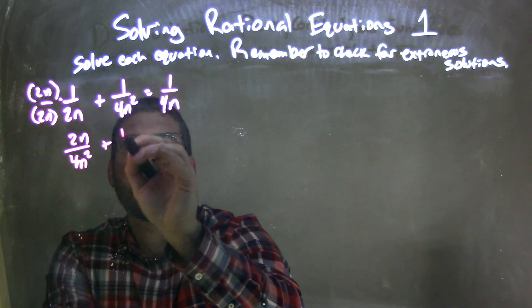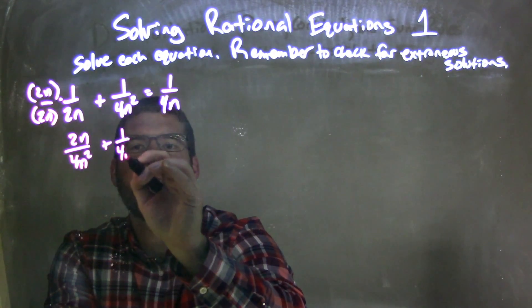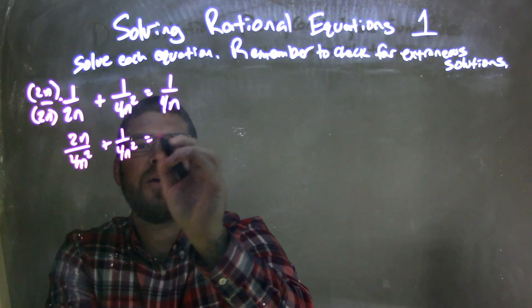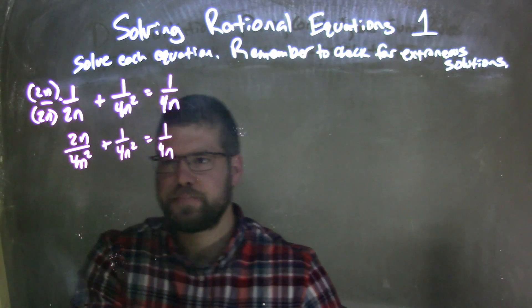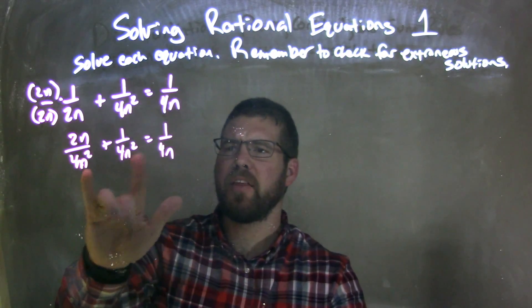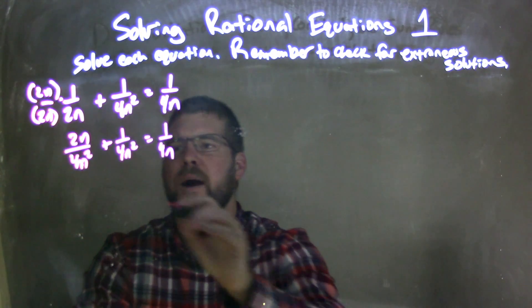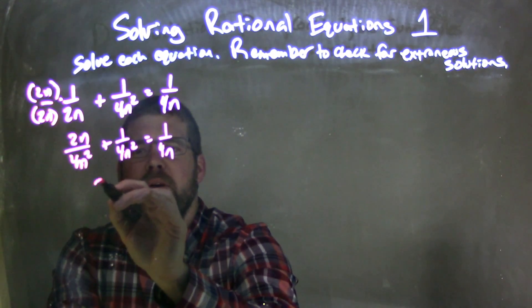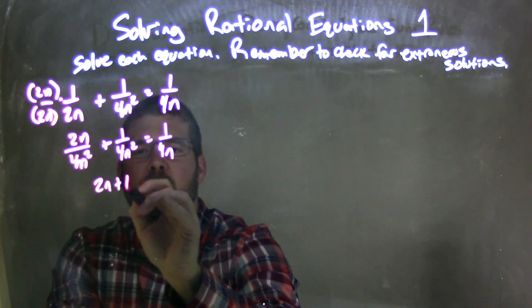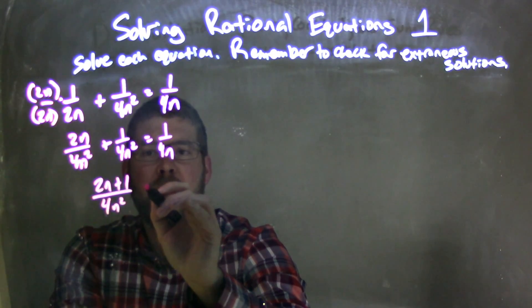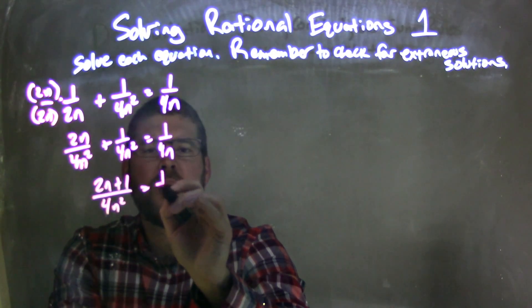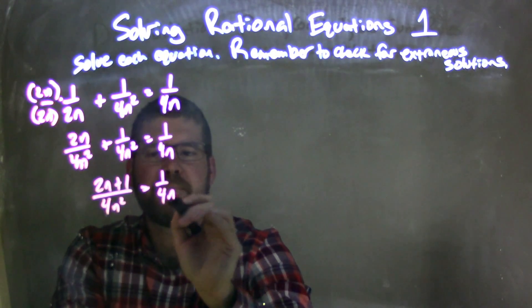Plus 1 over 4n squared equals 1 over 4n. Now that they have the same base, I can combine them, giving me 2n plus 1 on the numerator and 4n squared on the denominator, equal to 1 over 4n.